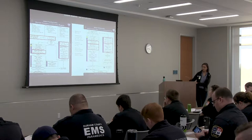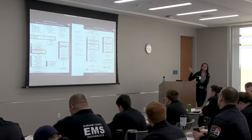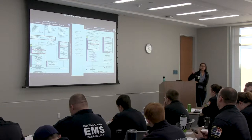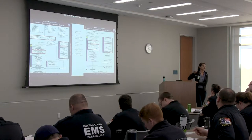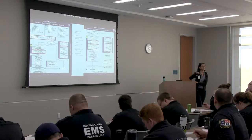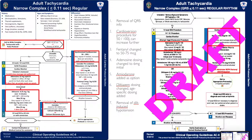Amiodarone was added as an option for this protocol. The dosing concentration has changed — it used to be 450 milligrams in 250 cc's, and now it's going to be 100 milligrams in 100 cc's because it's a lot easier to dose. That was after some feedback. Diltiazem dosing was also changed with age-specific dosing added, following a bolus, drip, bolus regimen. We've removed the dilt-induced hypotension that was in the previous protocol.